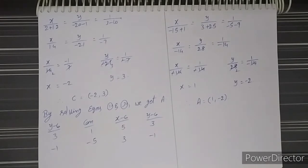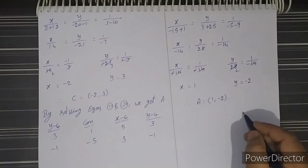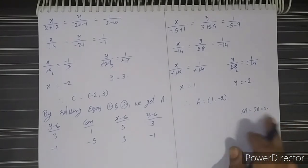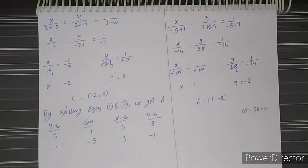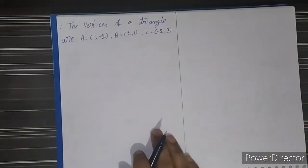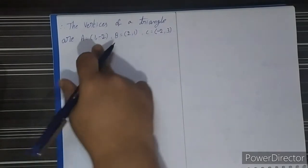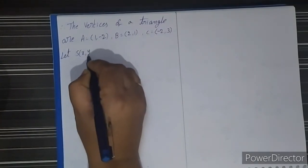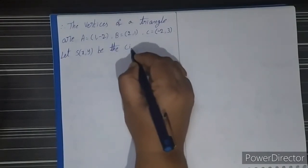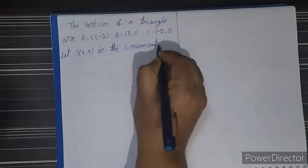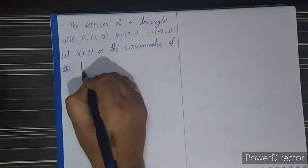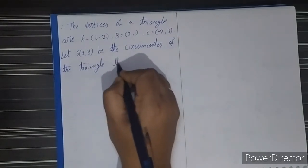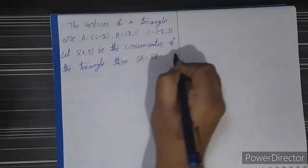From this we have found all vertices of the triangle. By using all these we have to solve two conditions to get the circumcenter. Therefore the vertices of the triangle are: A = (1, −2), B = (2, 1), and C = (−2, 3). Let S(x, y) be the circumcenter of the triangle. Then we have SA = SB = SC.